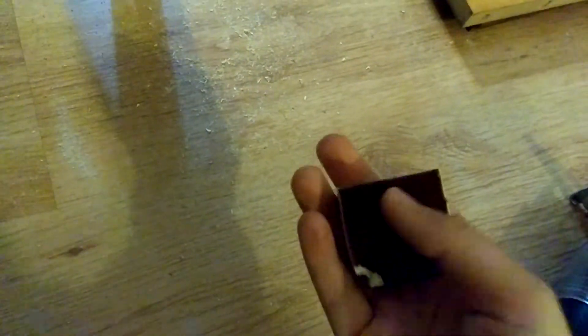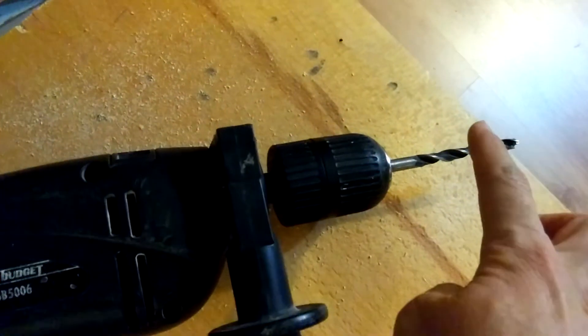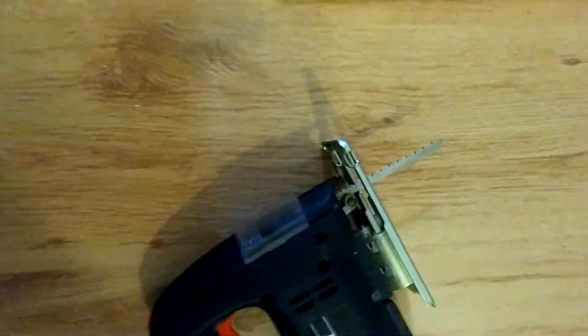And it's done. So all you have to do is make a hole with the drill and then you can turn the jigsaw's blade 90 degrees.